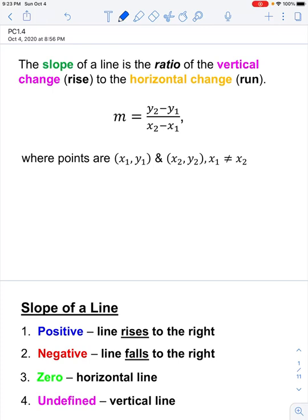Lesson 1.4 is a basic review of linear functions and slope. As you can see from our PowerPoint, the slope of a line is the ratio of the vertical change, which we call the rise, to the horizontal change, which we call the run.